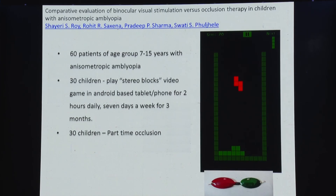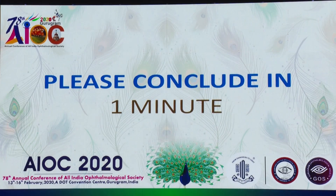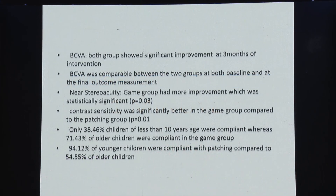A study recently concluded at our center compared two groups of 30 children each — one group used a Tetris game available online and on the Android platform, while the other used part-time occlusion. Best-corrected visual acuity improved significantly in both groups at three months, and final visual acuity was comparable. However, near stereo acuity and contrast sensitivity showed more improvement in the game group. Notably, children under 10 years were more compliant with occlusion, while older children were more compliant with the game group.